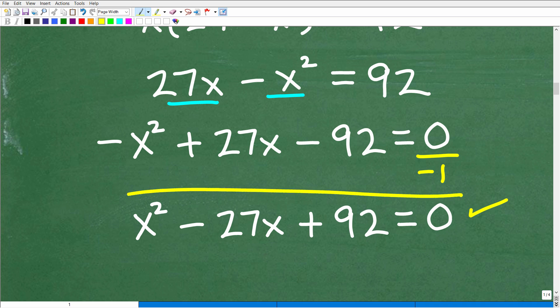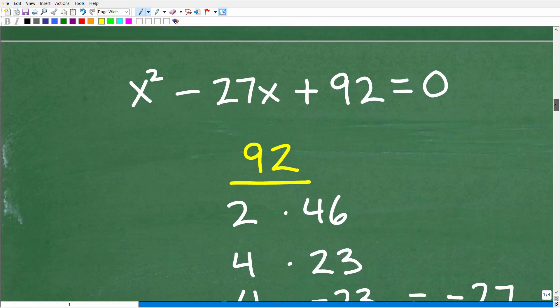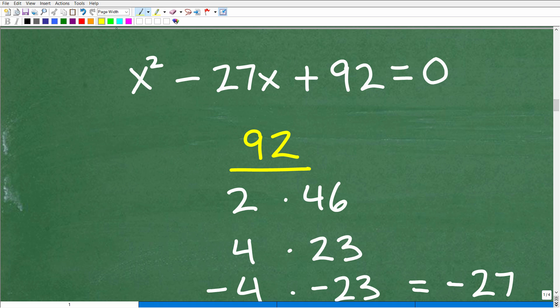So all these signs here become the opposite, right? So this negative is going to become positive. This positive is going to become negative. And this negative is going to become positive. And then zero divided by negative one is just zero.